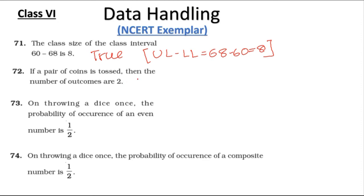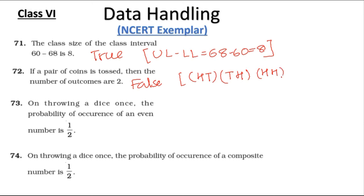Question 72: If a pair of coins is tossed, the number of outcomes are 2 — this is a false statement, because there could be head-tail, tail-head, both heads, or both tails. So totally four outcomes are possible.